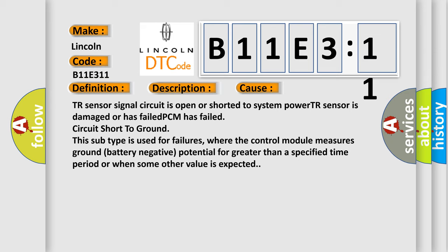This subtype is used for failures where the control module measures ground battery negative potential for greater than a specified time period or when some other value is expected.